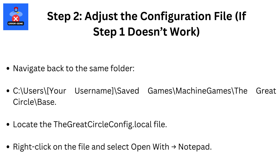Step 2: Adjust the Configuration File. If Step 1 doesn't work, navigate back to the same folder: C:\Users\your username\Saved Games\Machine Games\The Great Circle\Base. Locate the The Great Circle Config Local file, right-click on it, and select Open With > Notepad.